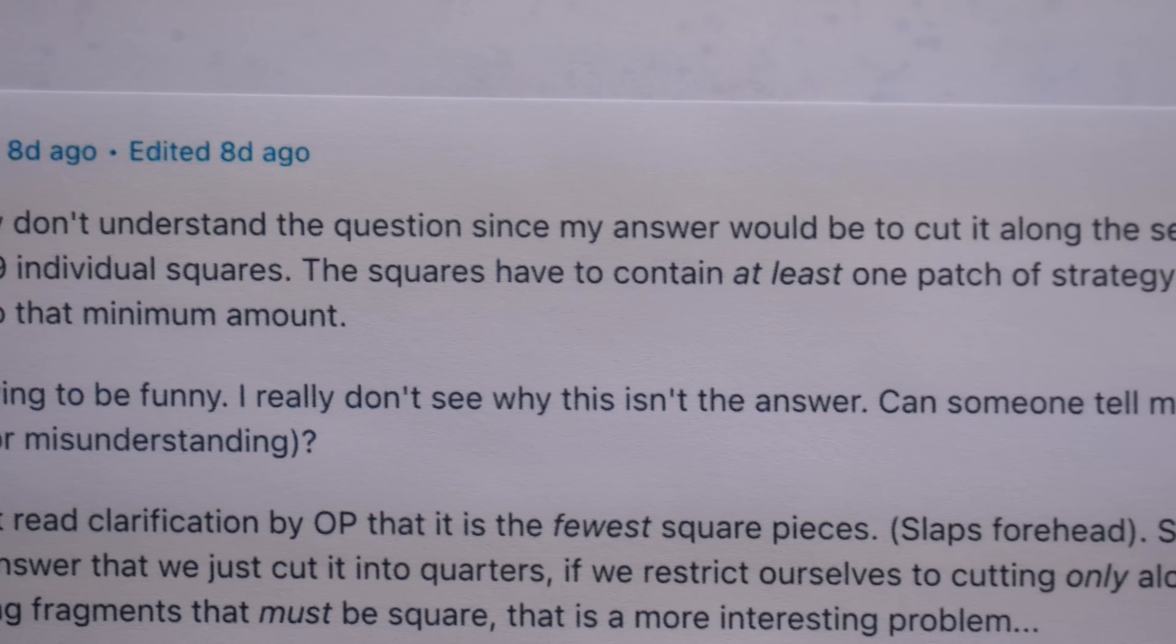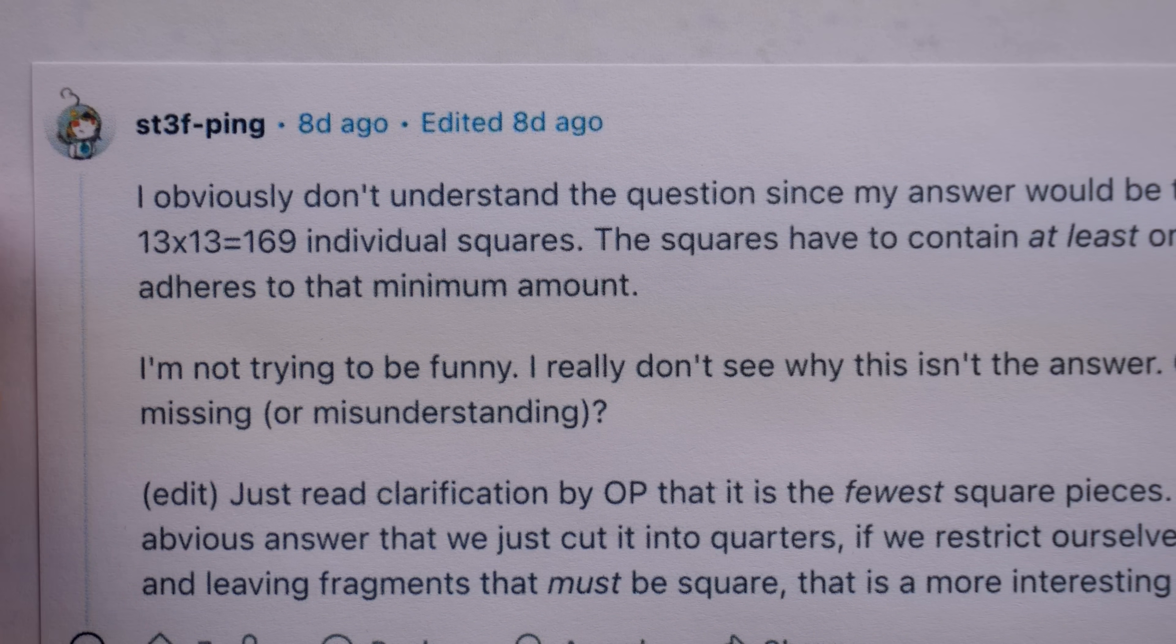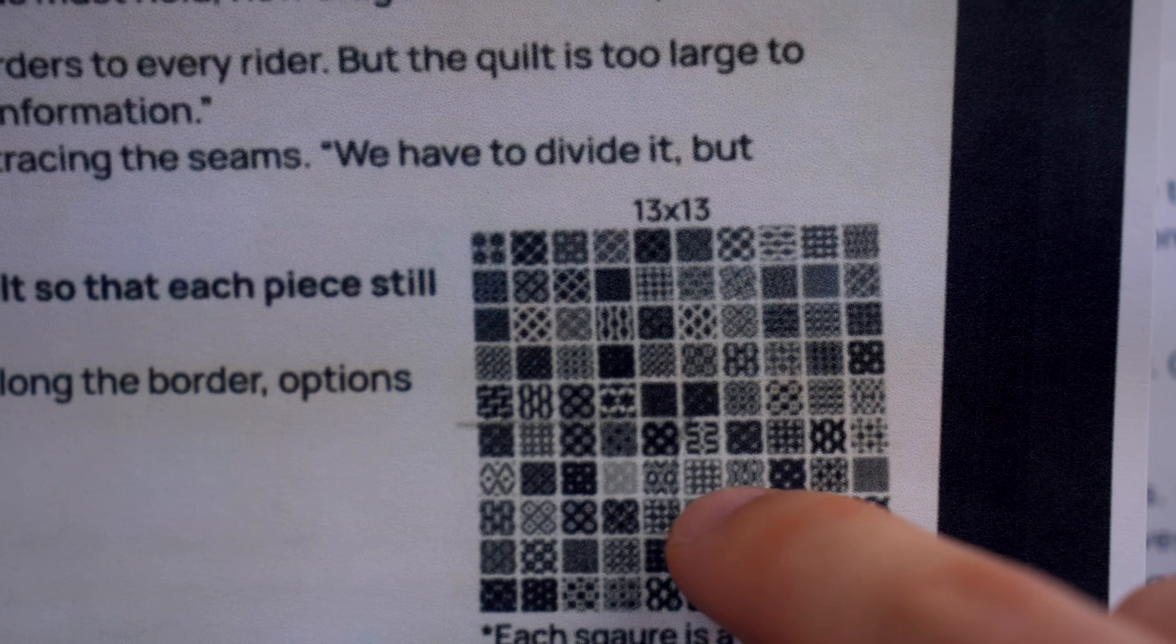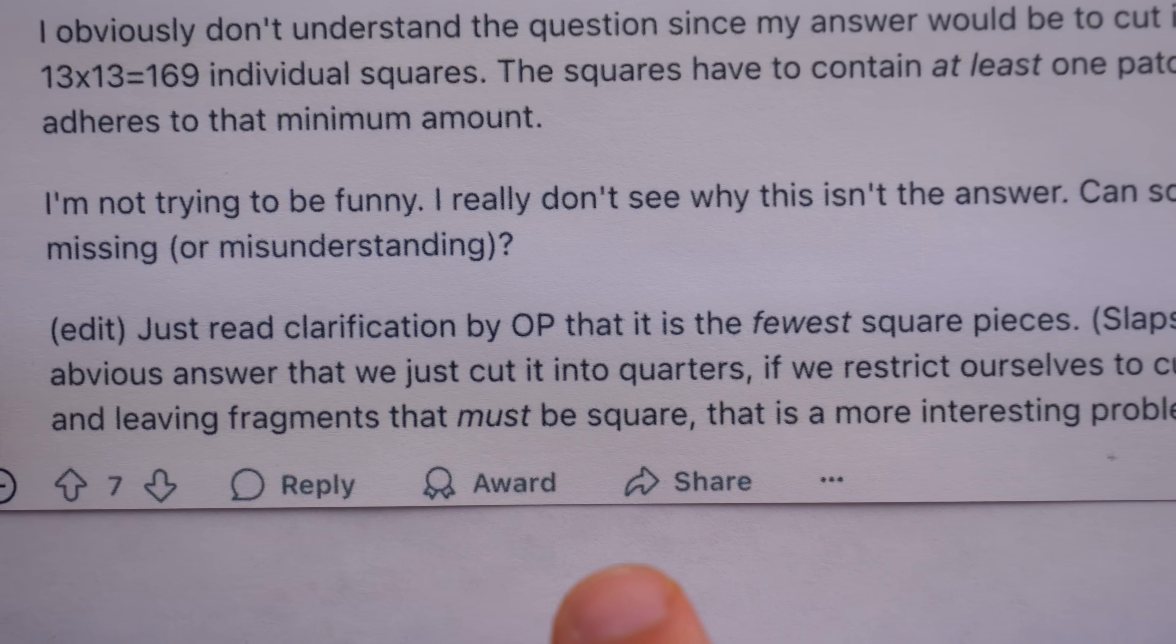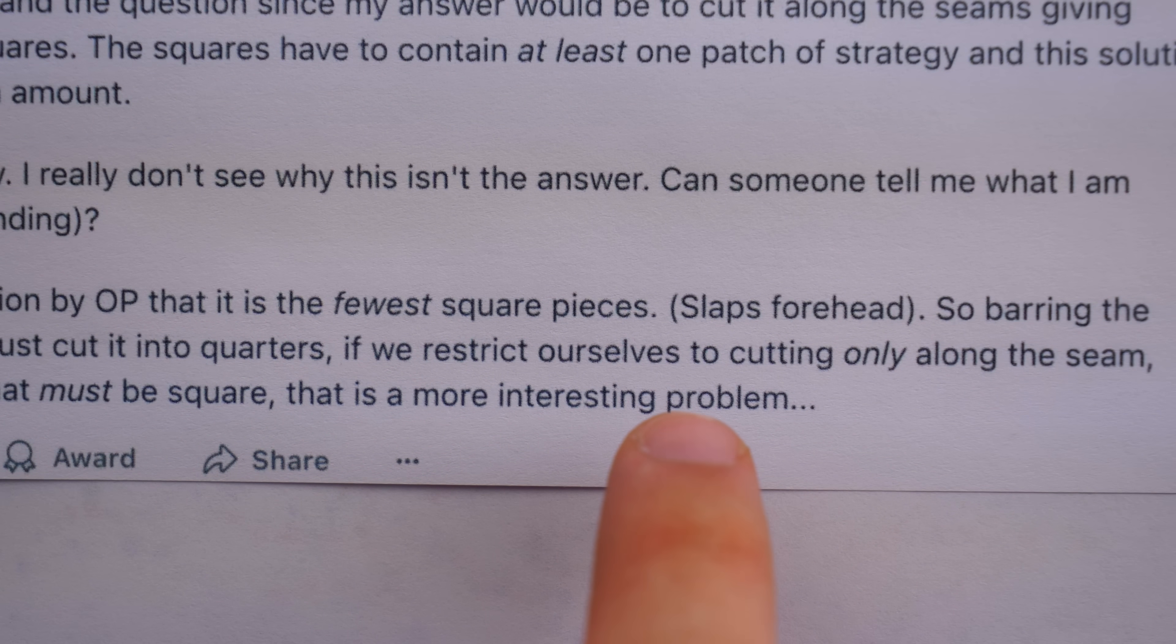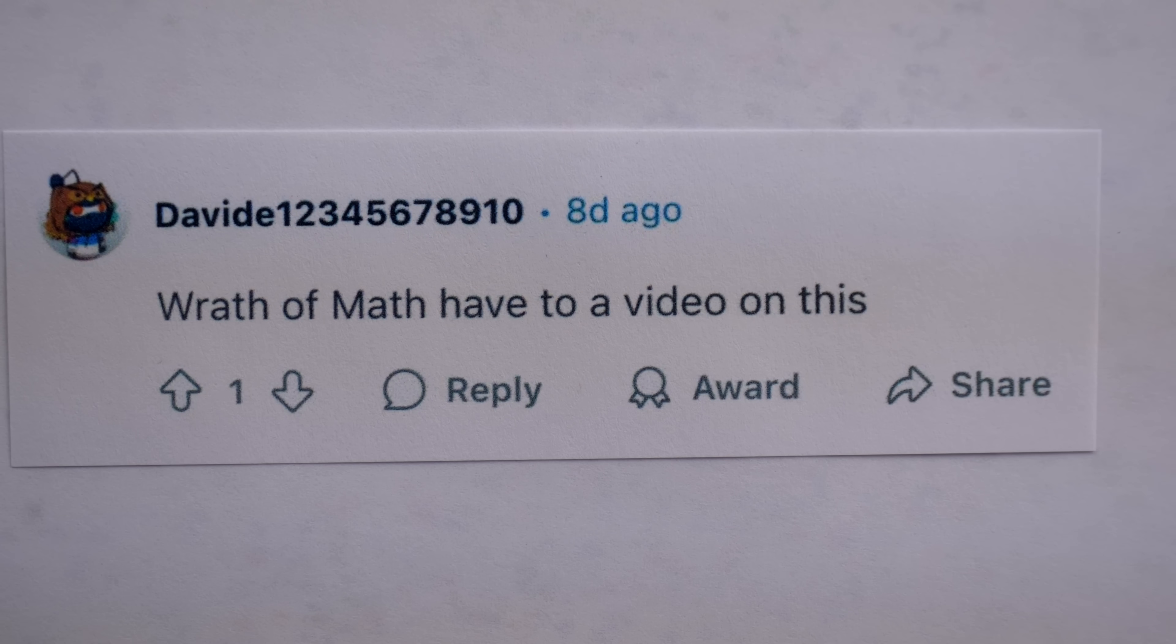Since my answer would be to cut it along the seams, giving 13x13, 169 individual squares. Of course, he missed the detail that we're trying to minimize the number of square pieces. Certainly, any quilt could be cut into the individual square patches by just cutting along all of the seams. Once he realizes this fact, he says that if we restrict ourselves to cutting only along the seams and leaving fragments that must be square, that is a more interesting problem. A more interesting problem indeed. Someone else said, Wrath of Math has to have a video on this. Well, here we are.